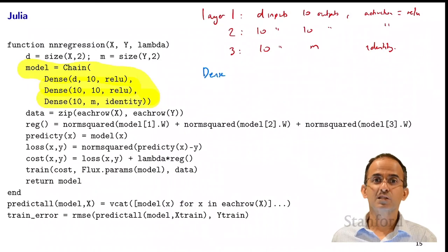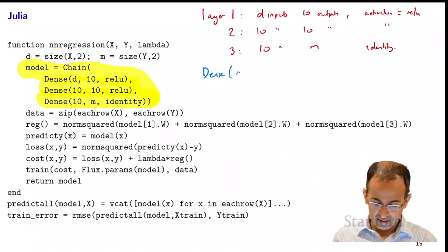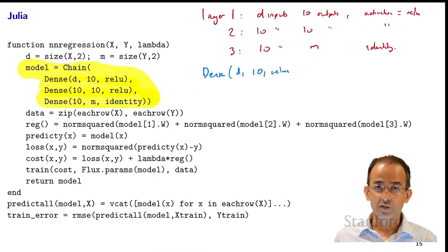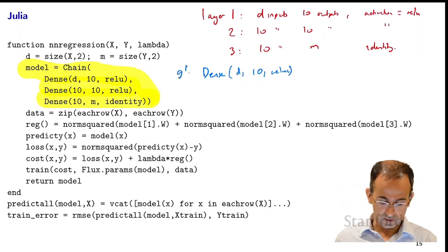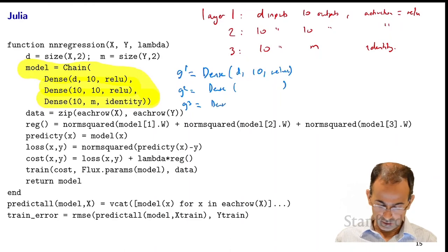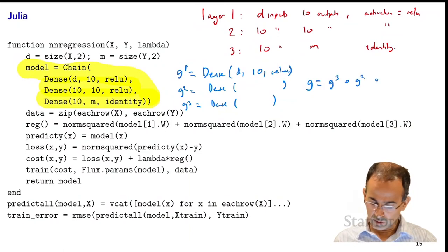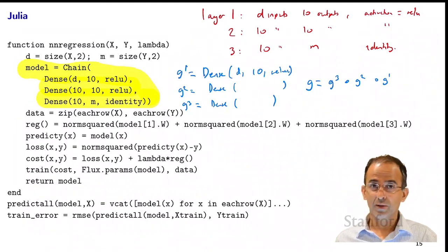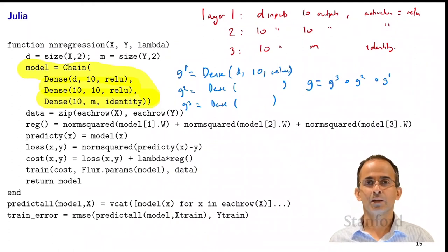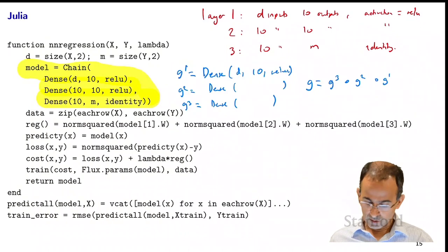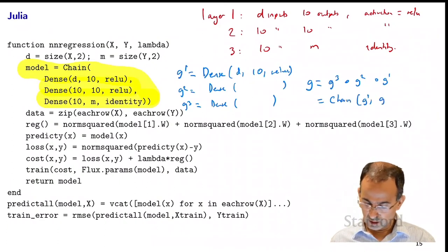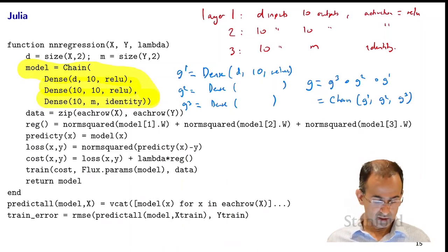The function 'dense' actually returns a layer function. When you call dense(d, 10, activation), it will return for you a function — we could call it g1. We get g2 and g3 similarly. Our overall neural network — the predictor g — would be g3 composed with g2 composed with g1. In Julia, you can actually type this using the Unicode circle symbol. If you don't know where to find that, you can just write chain(g1, g2, g3), which is exactly what we're doing there — it's just composing functions.